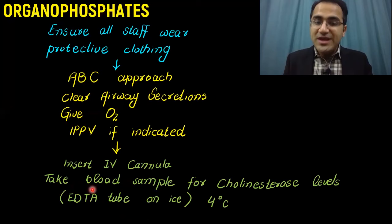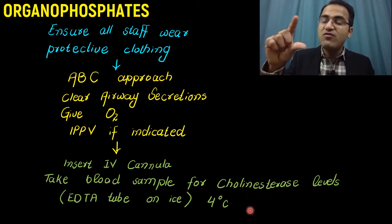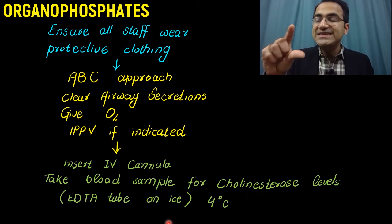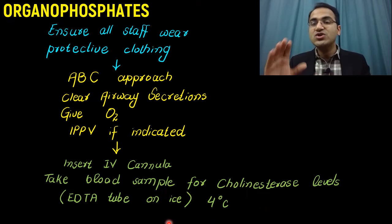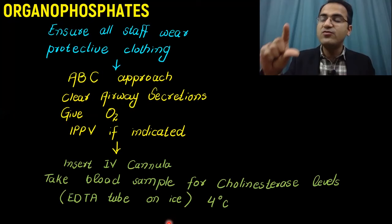Then you take the blood sample for cholinesterase levels. Remember that the blood sample for cholinesterase levels is taken in an EDTA tube. You put that EDTA tube on ice while you shift it to laboratory because you have to maintain temperature of four degrees centigrade. Otherwise, the results would be wrong.